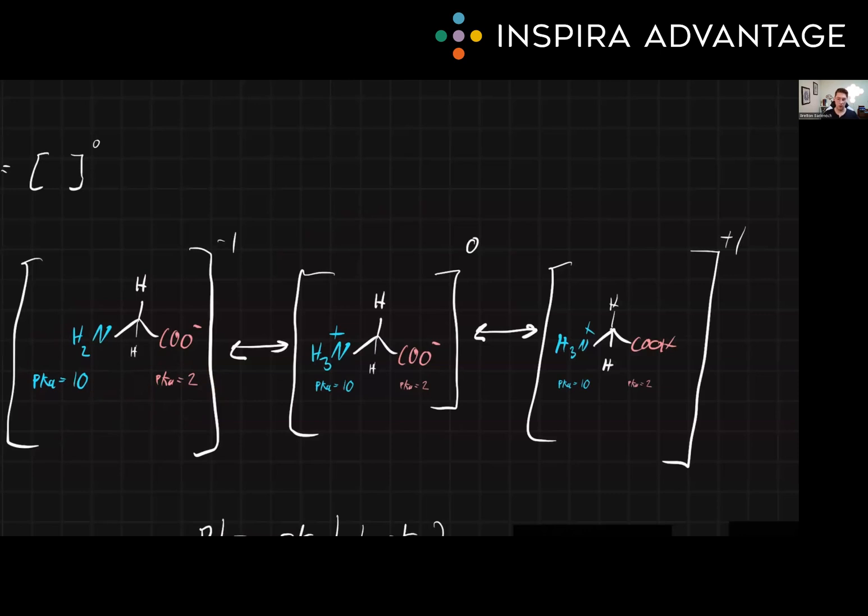At a pH below the pKa of the amino group, the amino group will be protonated. You can see here. So if we were to add pH to this, we see that the pH is going to be less than 2 over here. It's going to be greater than 10 over here. And we still have to figure out what the pH is here at our pI.